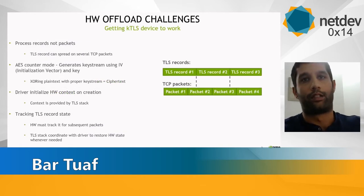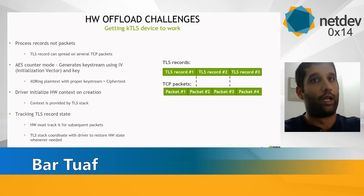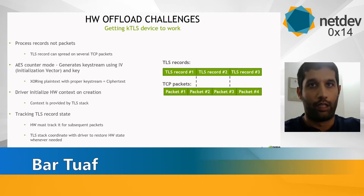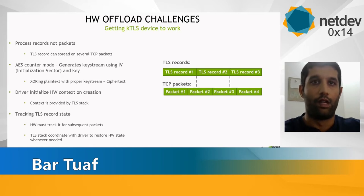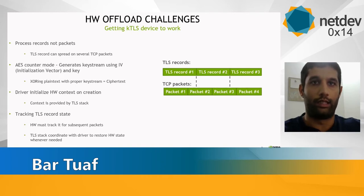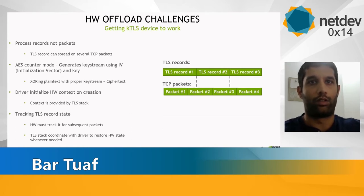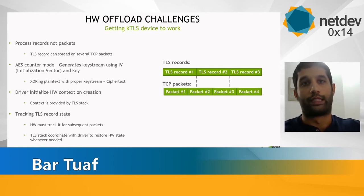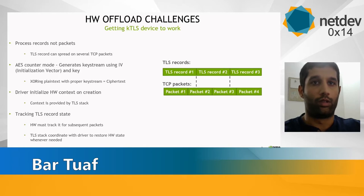Ideally we would process packets independently, as is the case in most common security protocols such as IPsec and DTLS. Unlike those protocols, TLS processes records, and those records can be spread across multiple TCP packets. In the chart on the right we can see an example where three TLS records lead to four MSS packets. A TCP packet — for example packet number two — is shared between TLS record number one and TLS record number two.